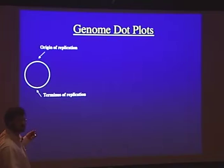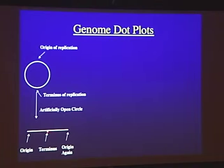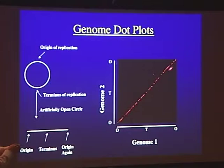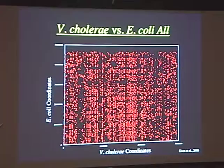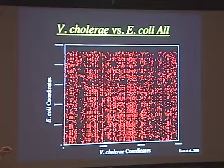When we do these dot plots, we have to linearize these genomes, so we break them open at the origin of replication. The terminus is right in the middle, and then you're back at the origin again at the end of the linear plot. If you do a dot plot of two closely related genomes, what you would see is a nice diagonal, because they have conserved gene order. Here's the origin of both genomes, here's the terminus, and you're back at the origin at the end of the dot plot.